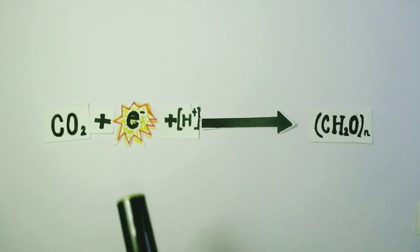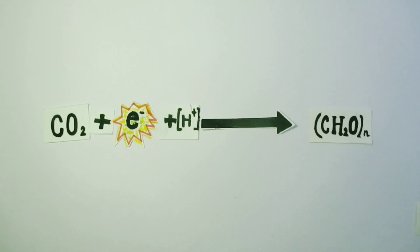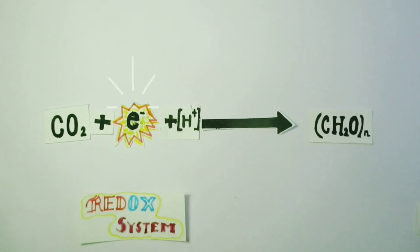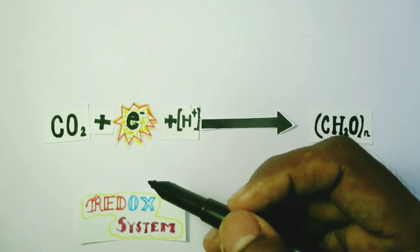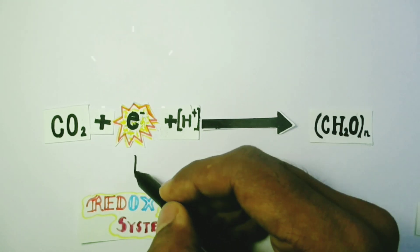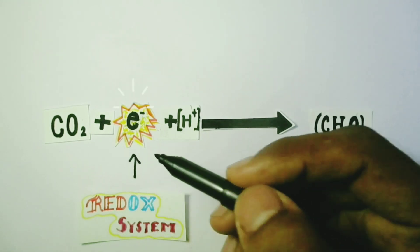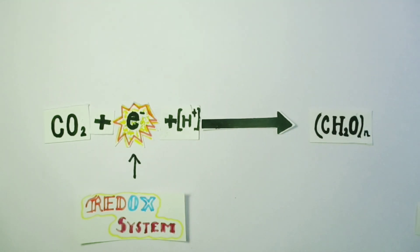If this electron is participating in this reaction, where would this electron be coming from? There must be a biological redox system which would provide this electron to this reaction. This electron from the redox system will participate in this reaction.